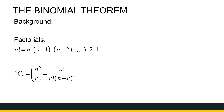Before we get started, there's just some background we need to make sure that you know what a factorial is. If I say n factorial for any natural number n, it's n times n minus 1 times n minus 2, all the way to times 1. For example, 5 factorial is 5 times 4 times 3 times 2 times 1.